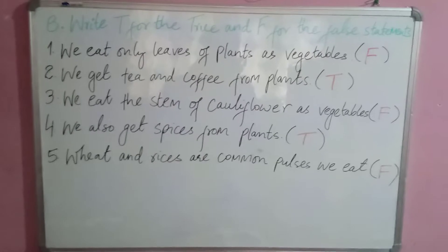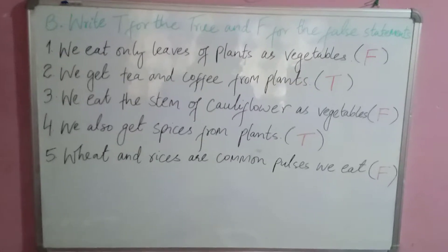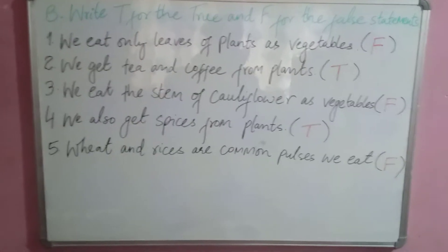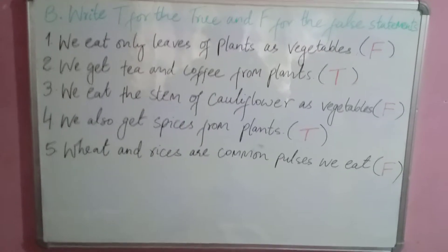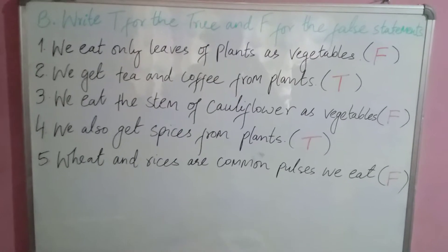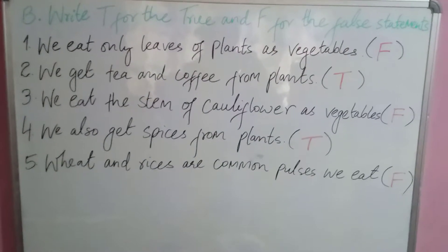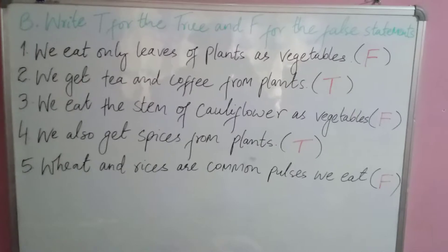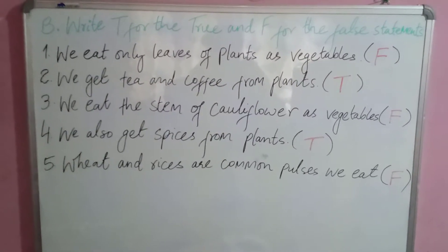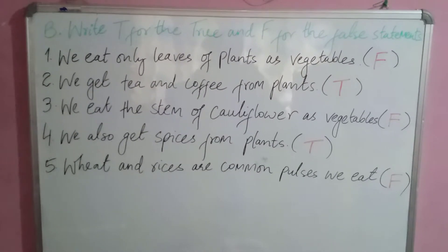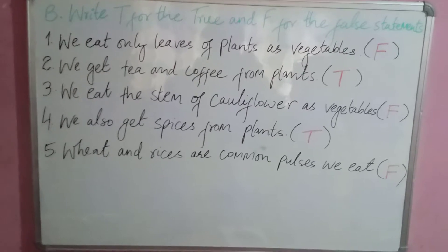It is false because we also eat stems and roots as vegetables — we don't only eat leaves. Question number two: we get tea and coffee from plants — this is a true statement, so write T in the bracket.